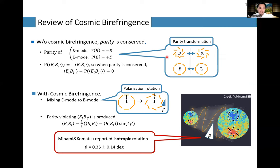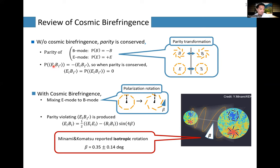We know that the auto-correlations of both B-mode and E-mode are parity-even: E-mode is invariant, and BB doesn't change sign. However, we can use the cross-correlation between E-mode and B-mode, which flips sign under parity transformation. So if our universe respects parity symmetry, this EB cross-correlation should vanish — it's a very good indicator of parity violation.